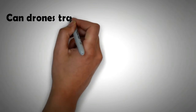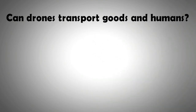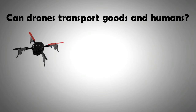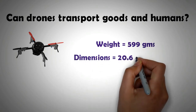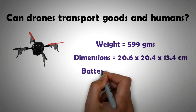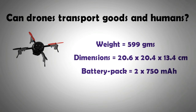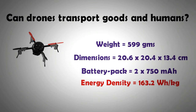The question therefore is: can this technology be scaled up to transport goods or humans in the future? Before making a speculative leap, a better starting point is observing the energy system of an existing micro-drone. The specifications of a top-selling drone are: weight 599 grams, dimensions 20 by 20 by 13 centimeters. It comes with two 750 milliamp-hour batteries rated at 3.7 volts, weighing about 34 grams, equating to a pack density of 163 watt-hours per kg — slightly higher than the Tesla battery pack at about 141 watt-hours per kg.